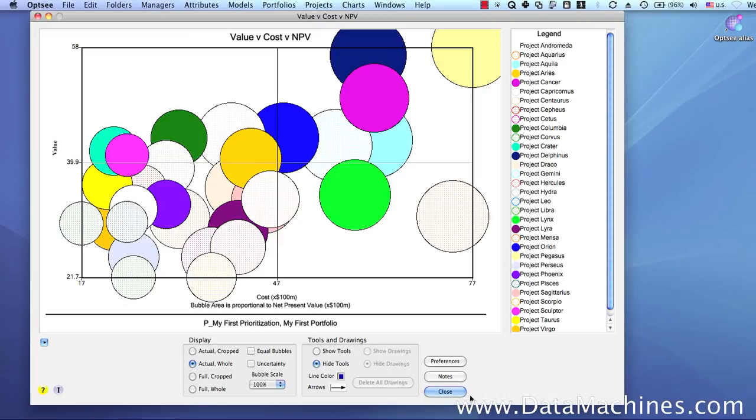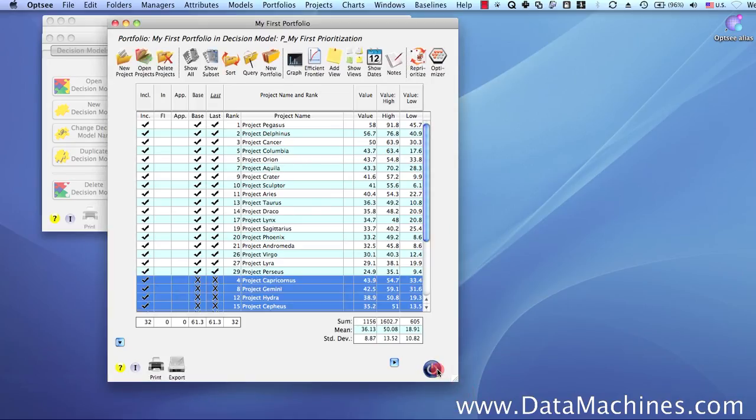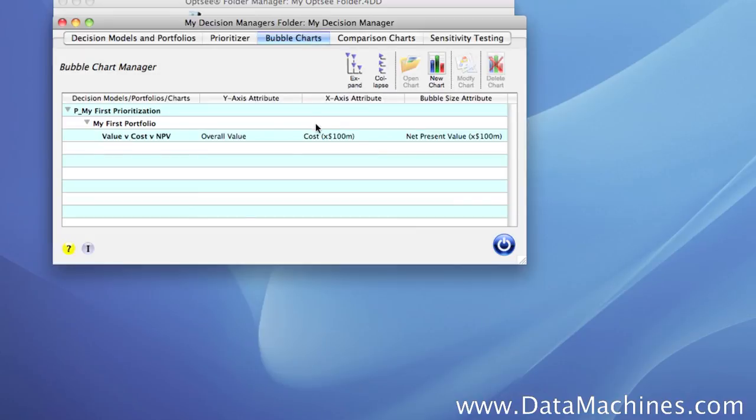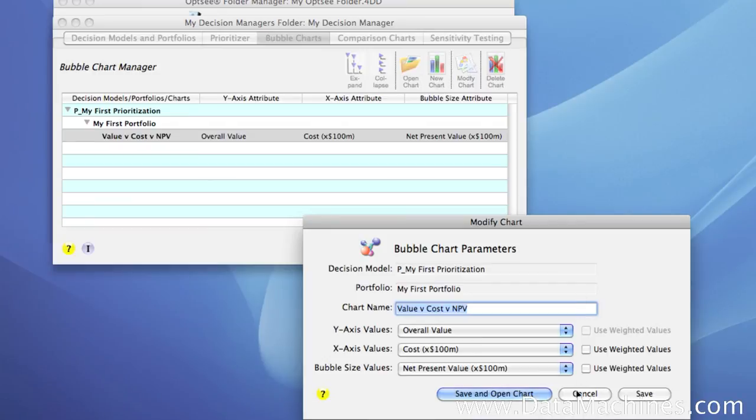Now, if we close the Bubble Chart form and return to the Decision Manager, we can see that the Bubble Chart has been saved under the Bubble Charts tab. We can modify, open, and create new charts from this place in the Decision Manager form.